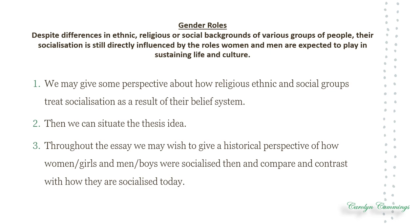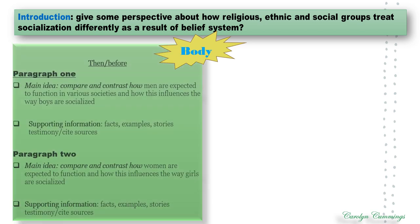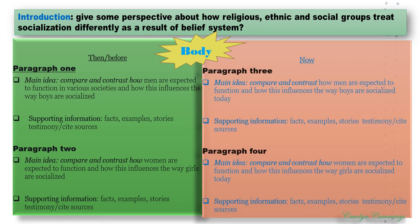So let's look at this a little more closely. In your introduction, there's a possibility that you can provide some context or perspective about how religious, ethnic, and social groups treat socialization differently as a result of their belief system — you could provide a general statement about this. Then we could go on to the body where we can break it down into two different sections: 'then' and 'now.'